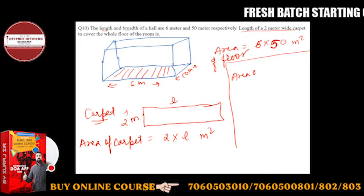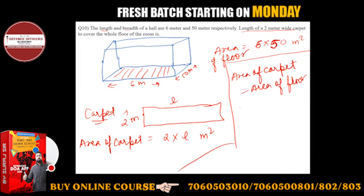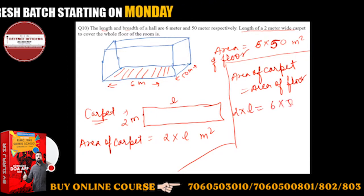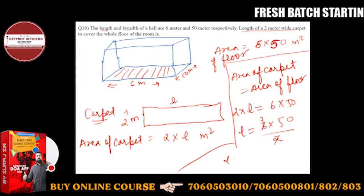So you should know that area of carpet is equal to area of floor. So what is the area of carpet? That is 2 into L is equal to 6 into 50. This will be 6 into 50 upon 2, and how much length is? 150 meter.